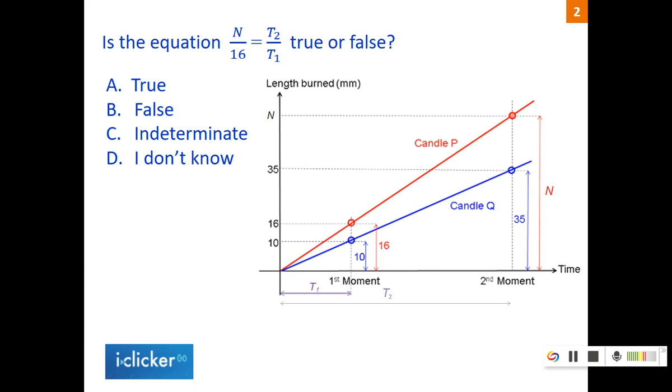The second equation is this: is the equation n over 16 equals t2 over t1 true or false? t2 and t1 is the time interval. t2 is from 0 to the second moment, and t1 is from 0 to the first moment. So it's n over 16 equals t2 over t1. Make a guess, and we will discuss the answer.